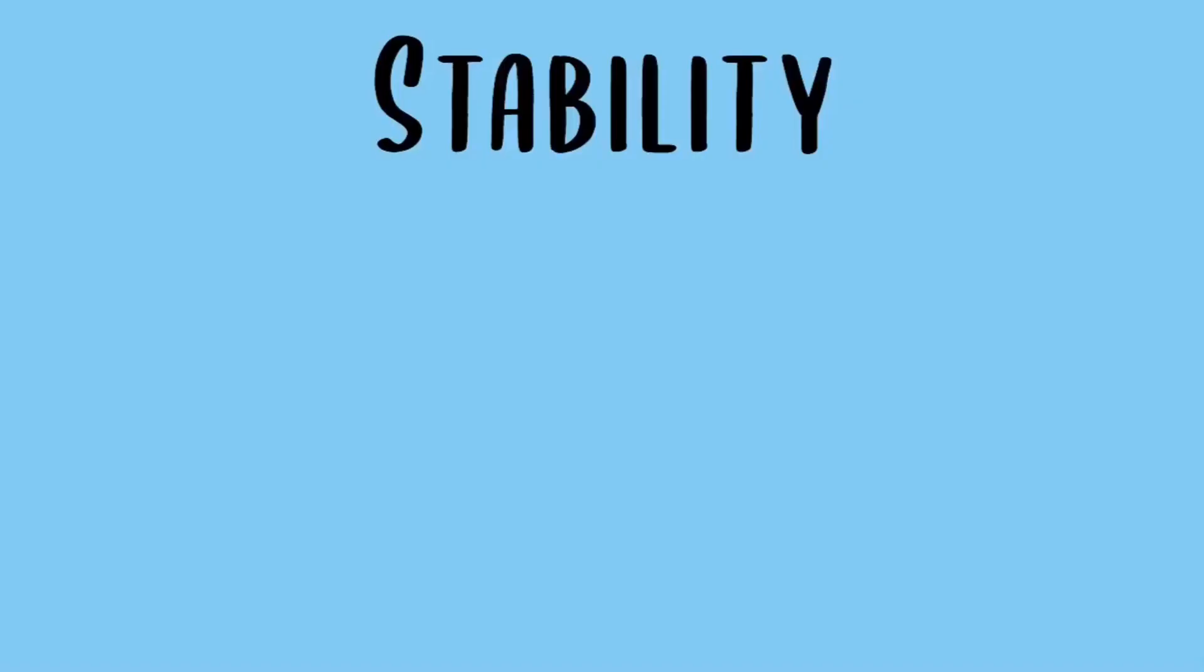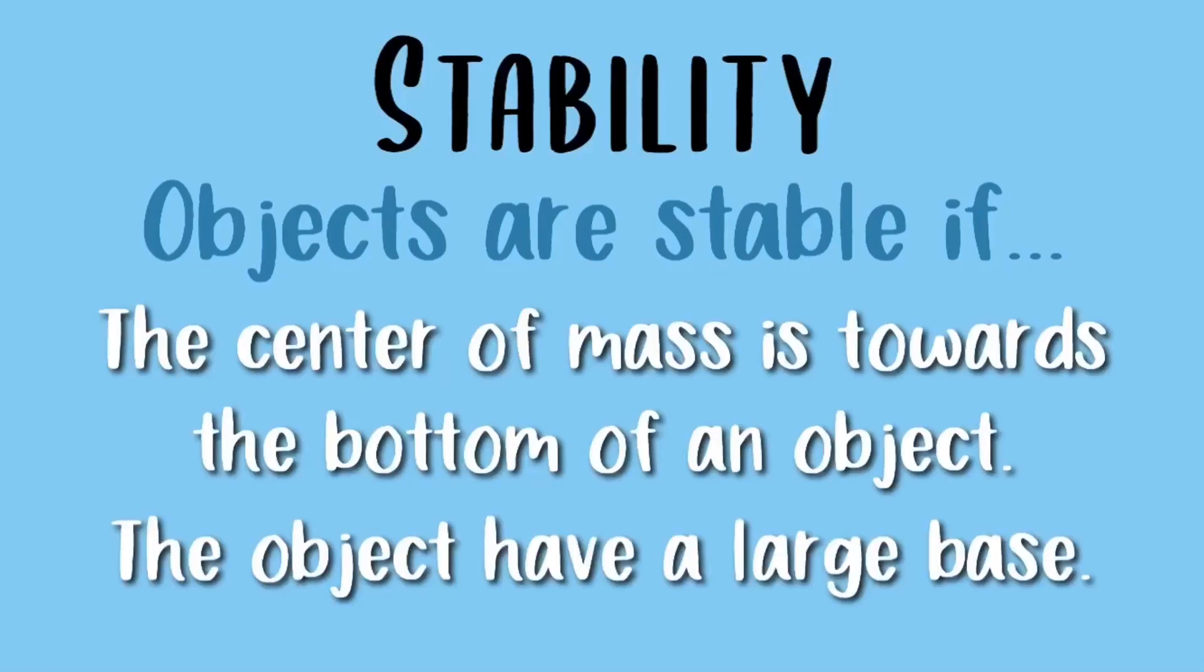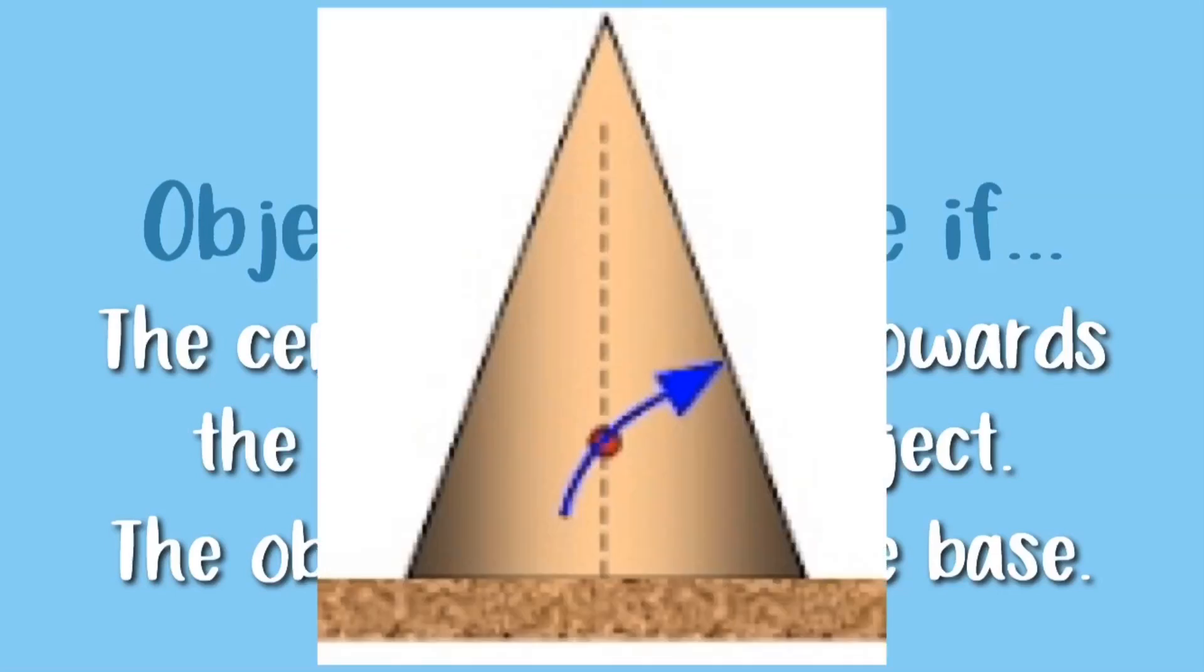Moving on to stability. Objects are stable if the center of mass is towards the bottom of an object and the object has a large base. This object is an example of a stable object because the center of mass is towards the bottom of the object and the base of the object is quite large.